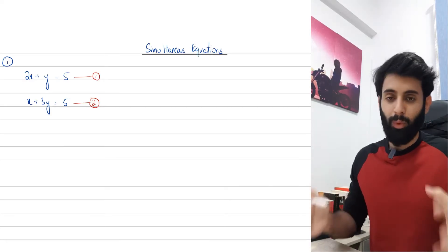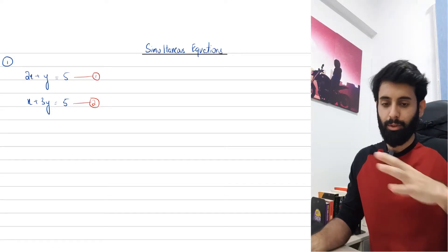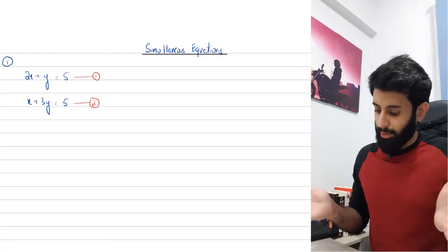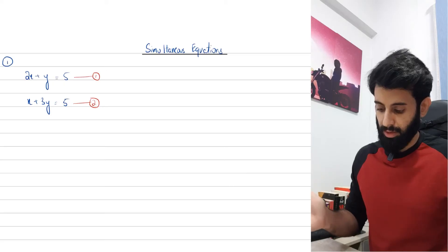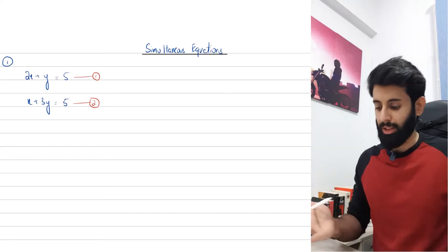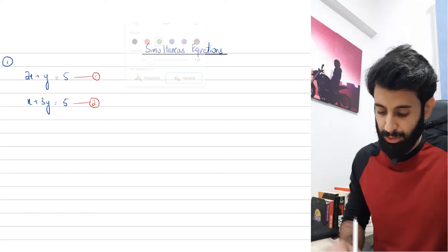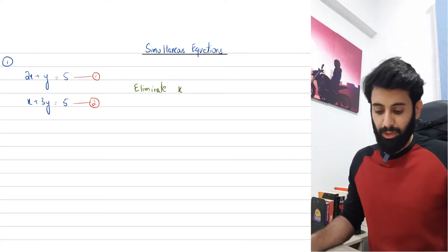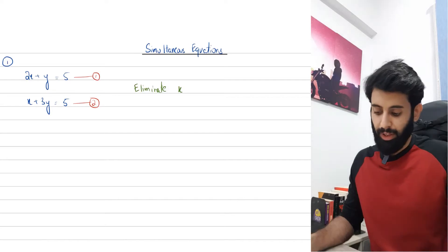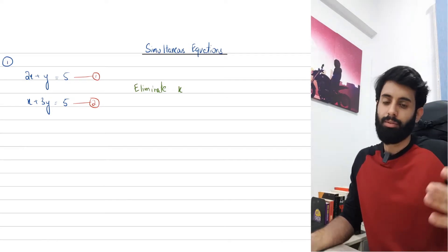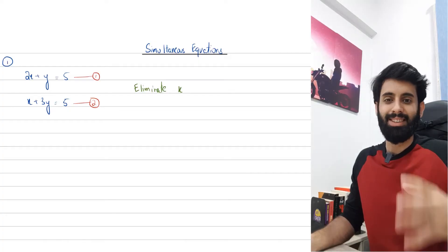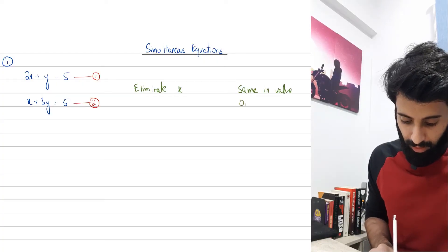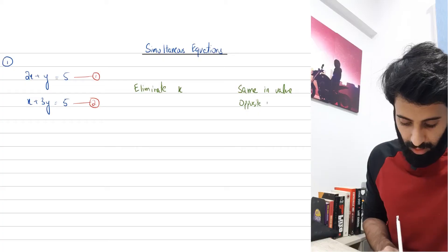The next thing you want to do is decide what variable you want to eliminate. There is no right or wrong answer — you could eliminate x or you could eliminate y, that's entirely up to you. I've decided to eliminate x, but you can eliminate y and it works the other way around also. Keep in mind that whenever you're eliminating a variable, you need to make sure that the coefficient of that variable is the same in value and opposite in sign.